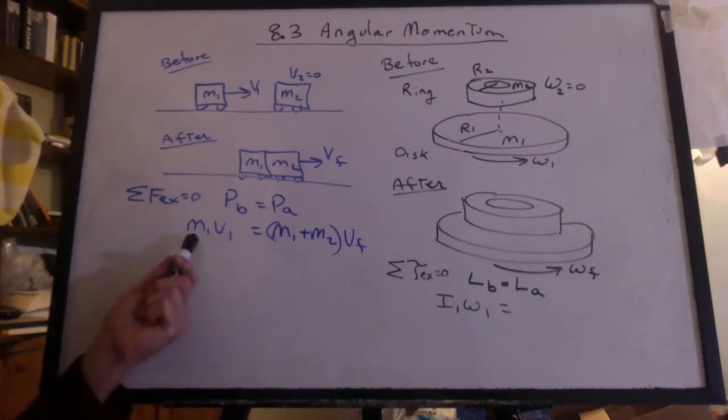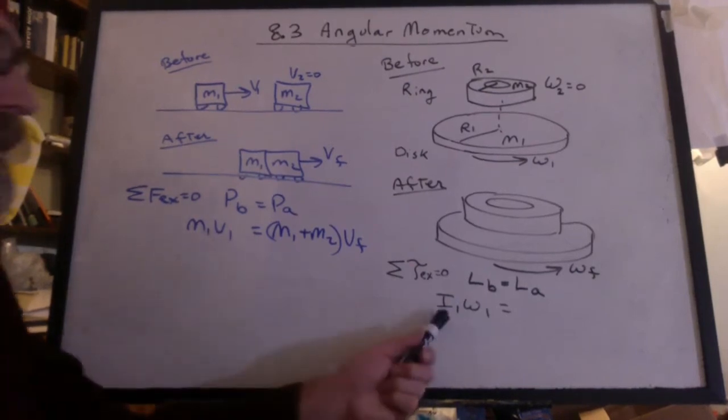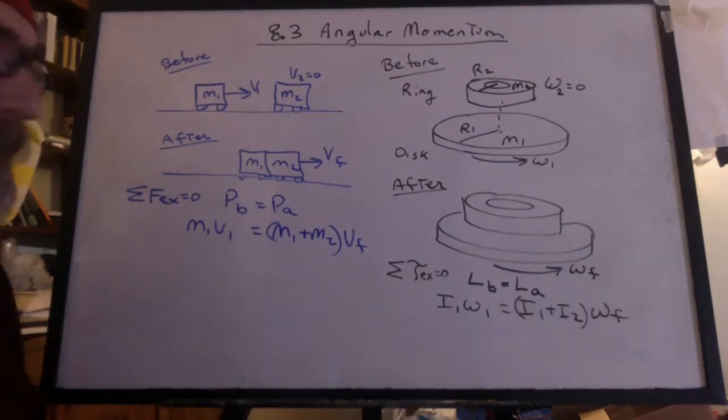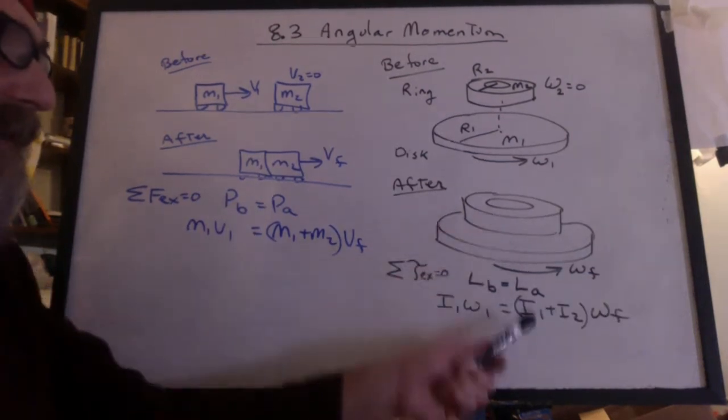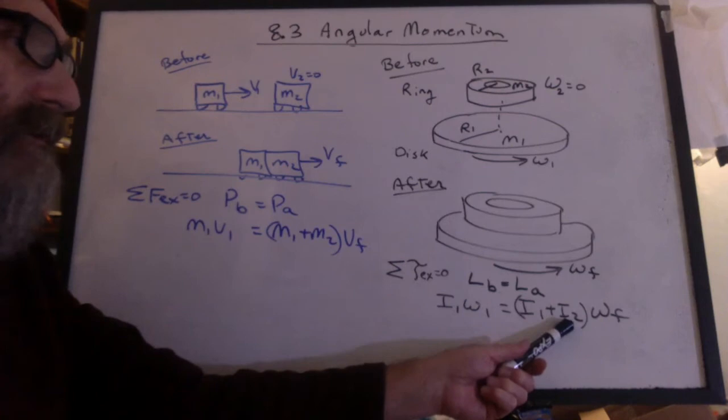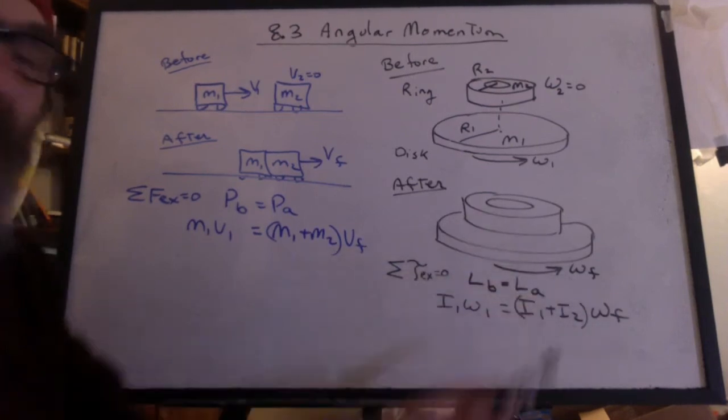Instead of talking about M1V1, we have I1 omega 1. And in the end, since they're stuck together, we have I1 plus I2. They both have the same final angular velocity.